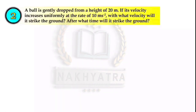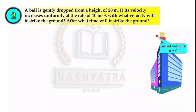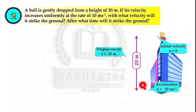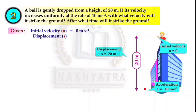Question number 2: A ball is gently dropped from a height of 20 meter. If its velocity increases uniformly at a rate of 10 meter per second square, with what velocity will it strike the ground and after what time? Since the ball is gently dropped, the initial velocity U = 0. The displacement S = 20 m and acceleration A = 10 m/s².